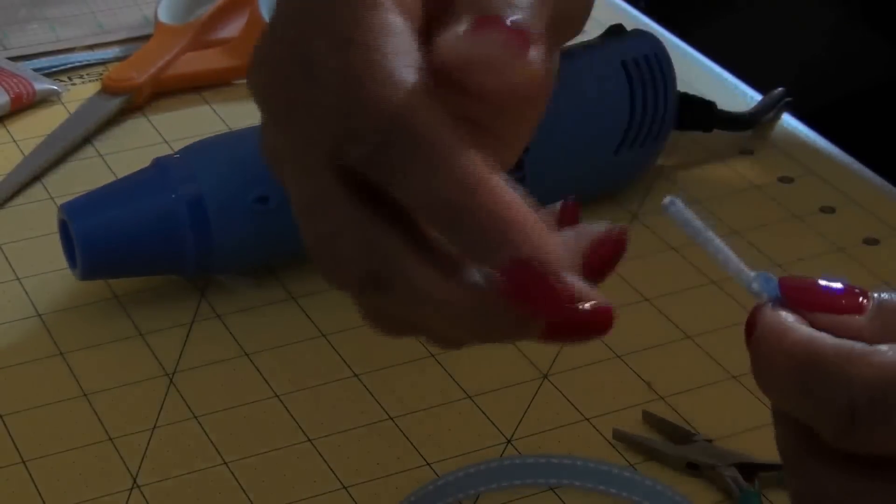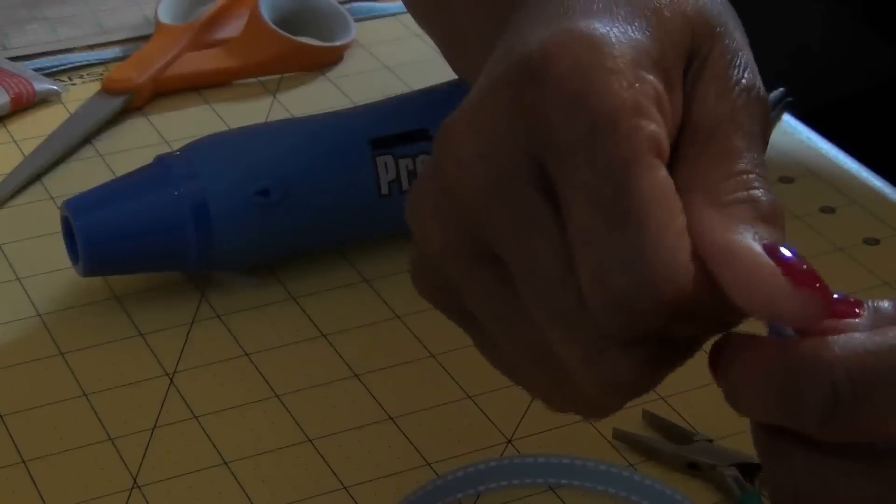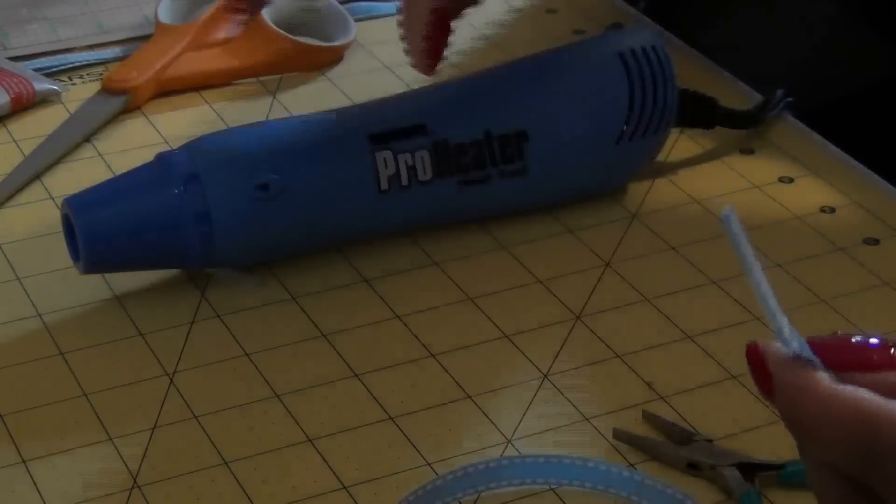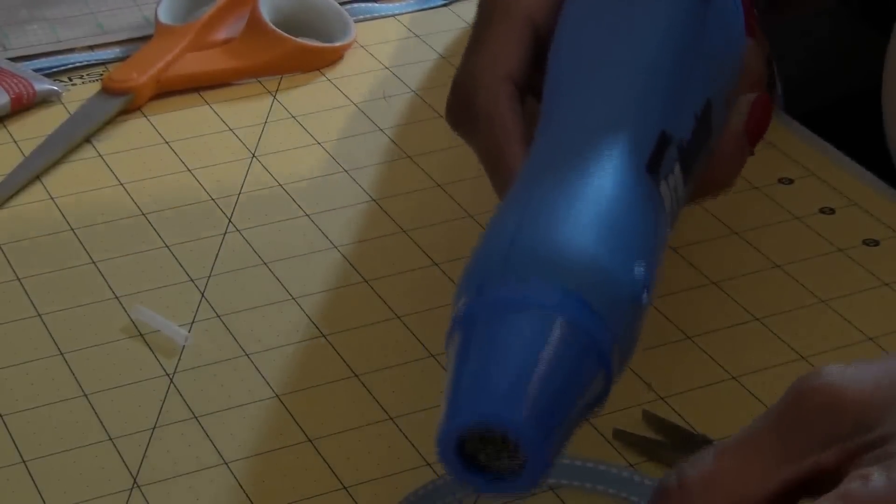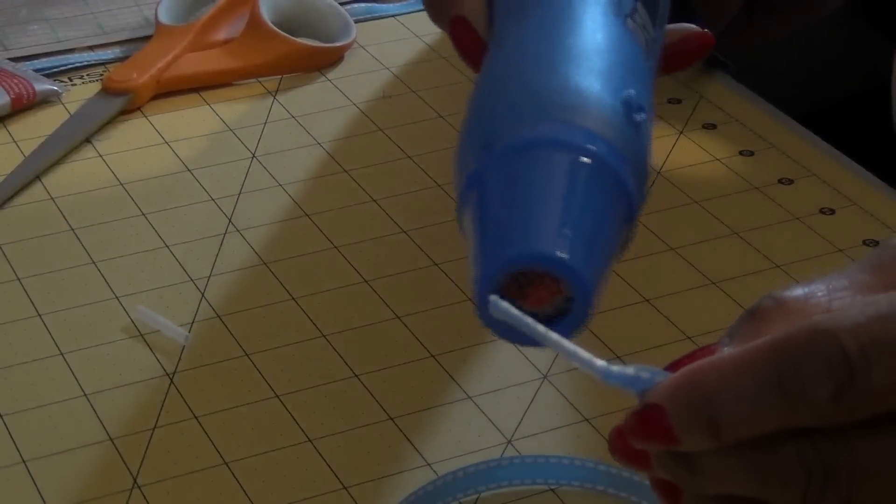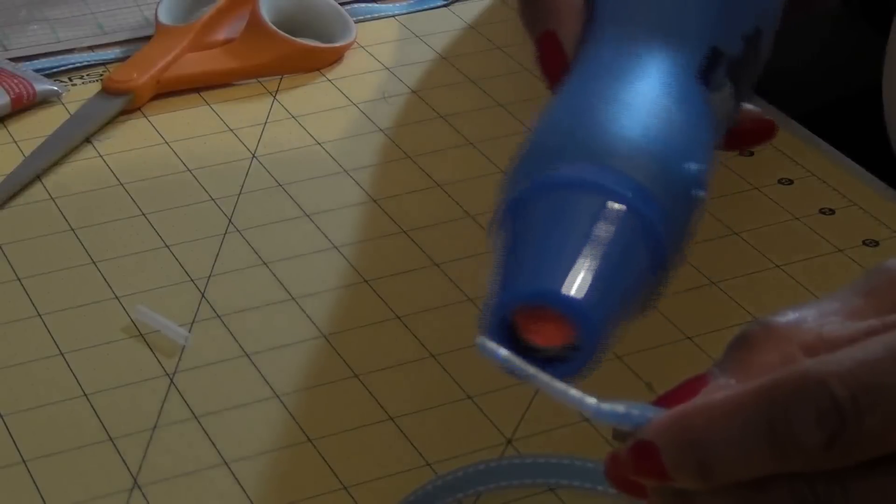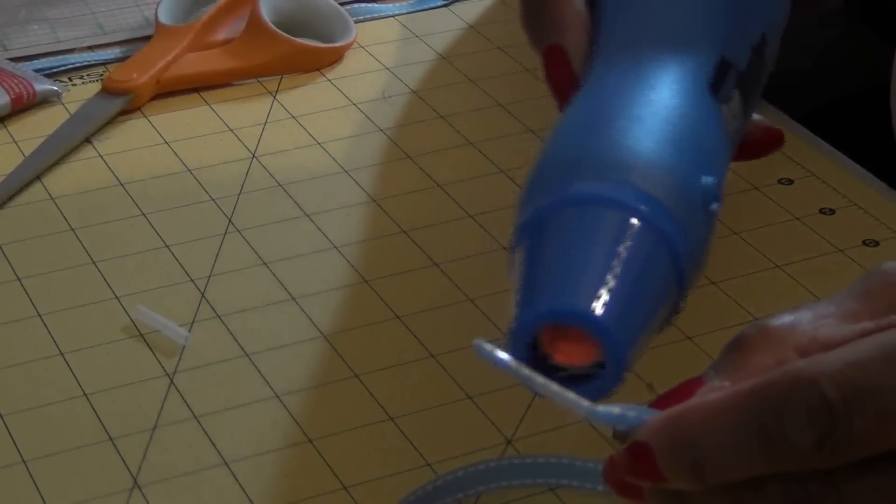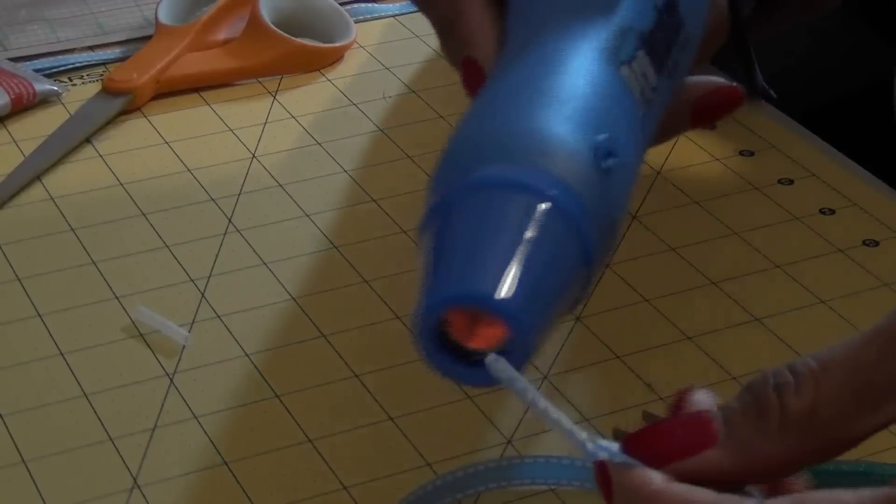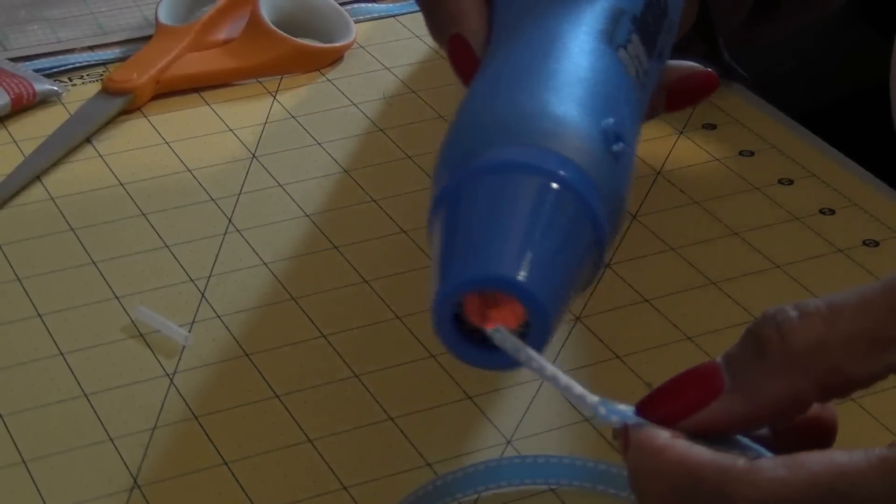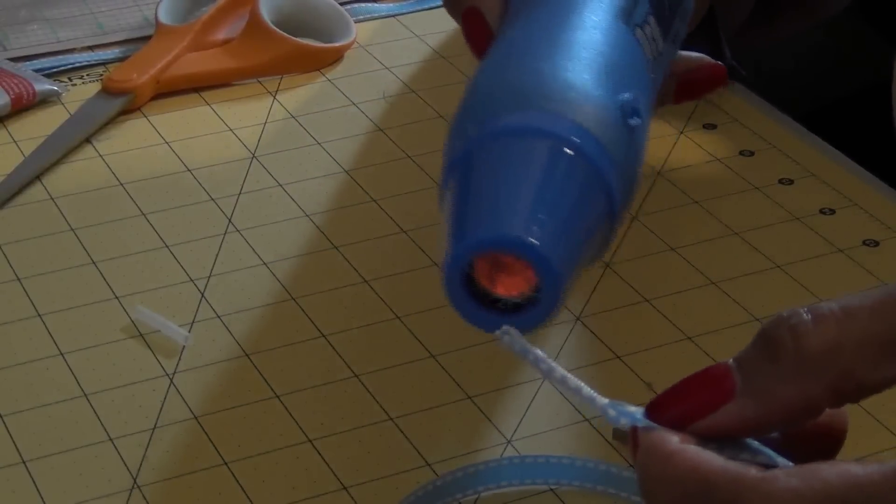Once you get it hot, take your fingers and roll the tubing to help keep its shape. Just keep rolling until I get it to shrink. Trust me, it will shrink.